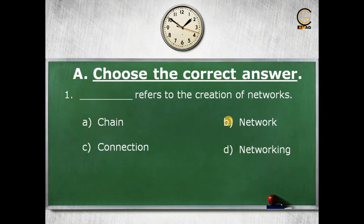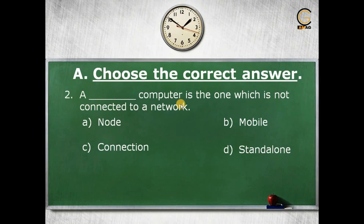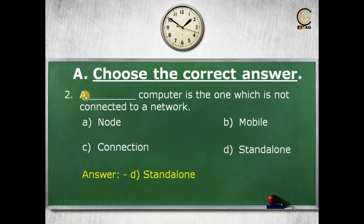First we will discuss some MCQ questions. The first question: dash refers to the creation of networks. The options are: a) chain, b) network, c) connection, d) networking. The correct answer is d) networking, as networking refers to the creation of networks. The next question: a dash computer is the one which is not connected to a network. The options are: a) node, b) mobile, c) connection, d) stand alone. The correct answer is d) stand alone.